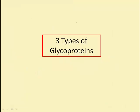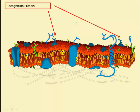There are three types of glycoproteins — combination sugar-proteins — located within the cell membrane. Recognition proteins have short polysaccharide chains that protrude from the surface of the membrane and distinguish the identity of nearby cells.